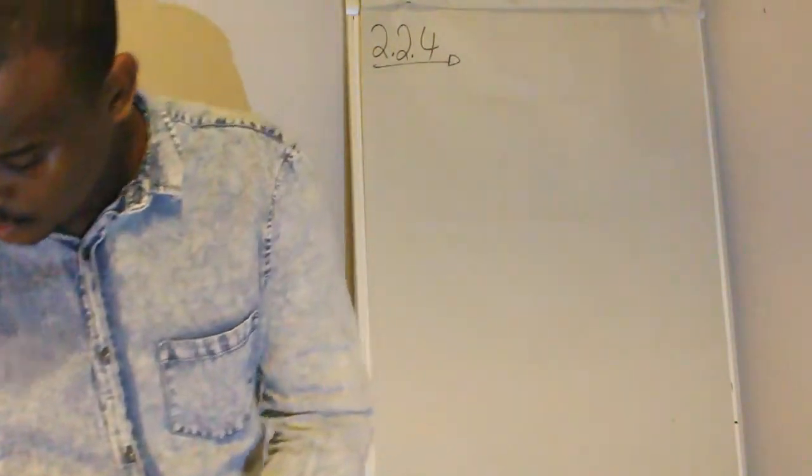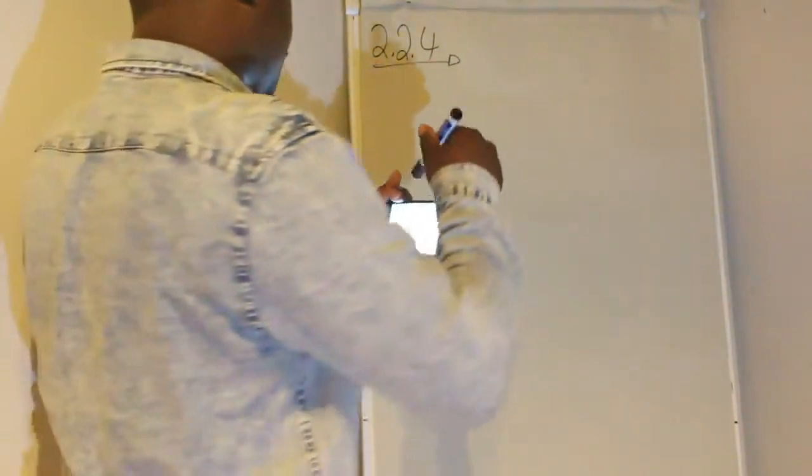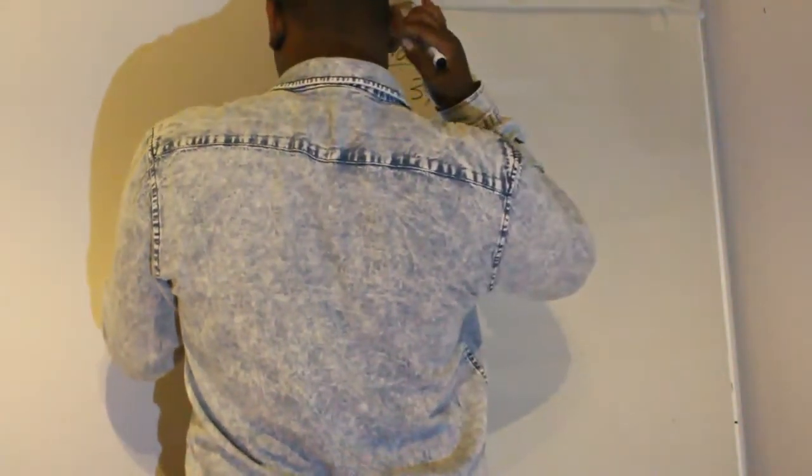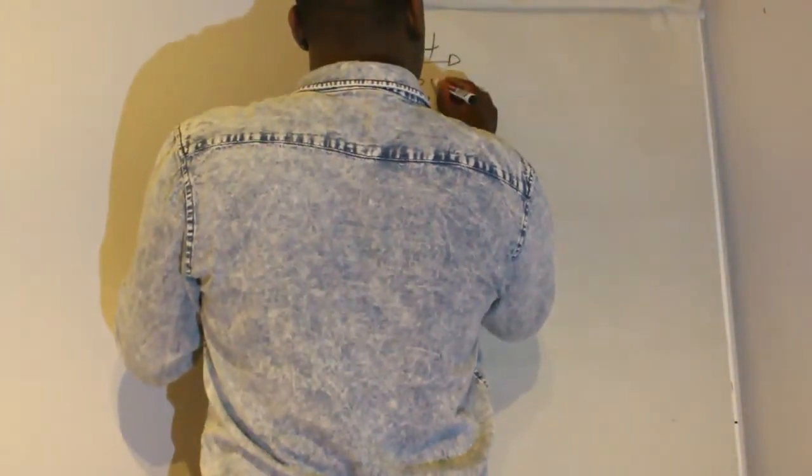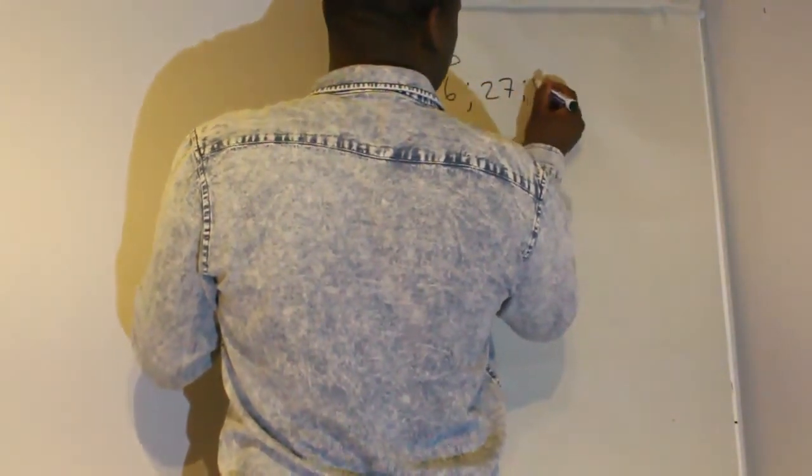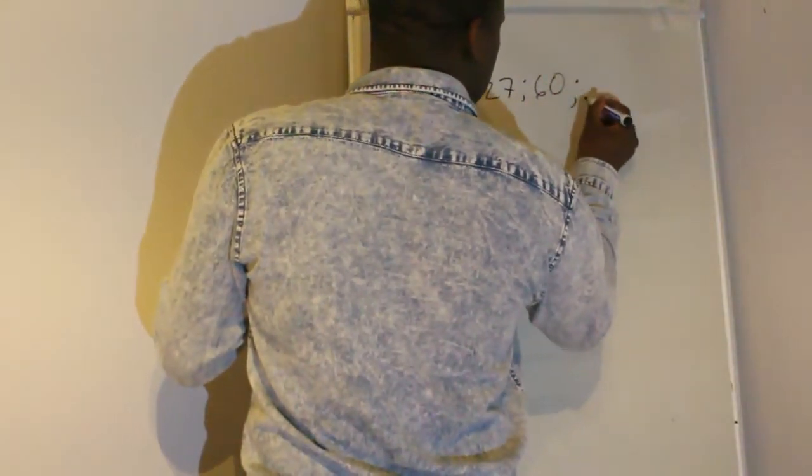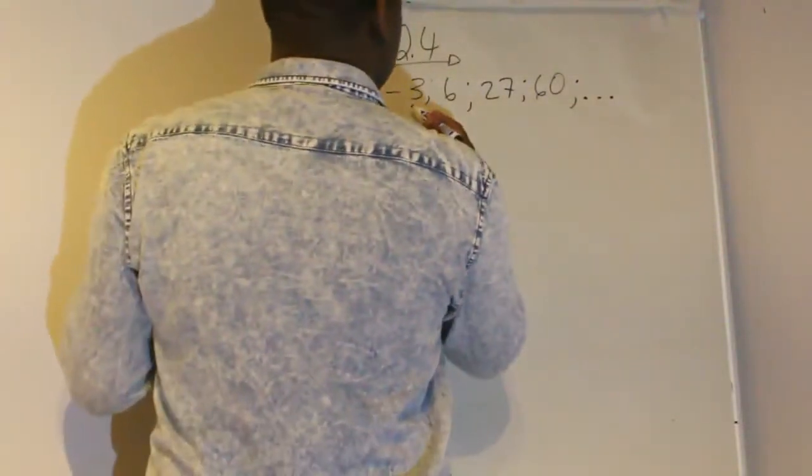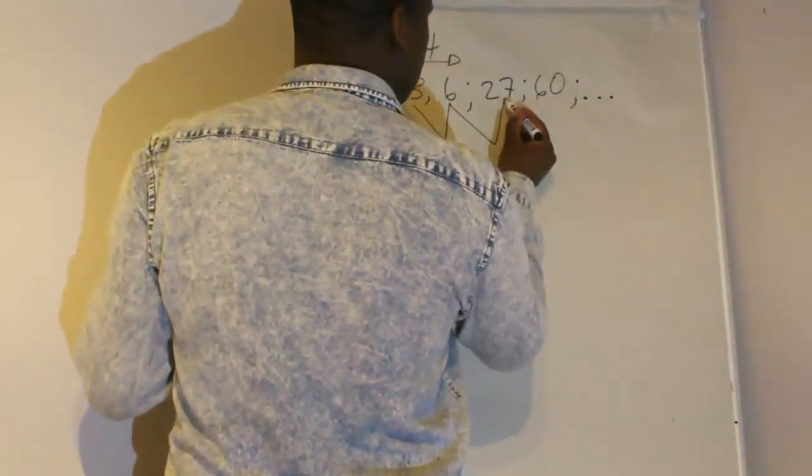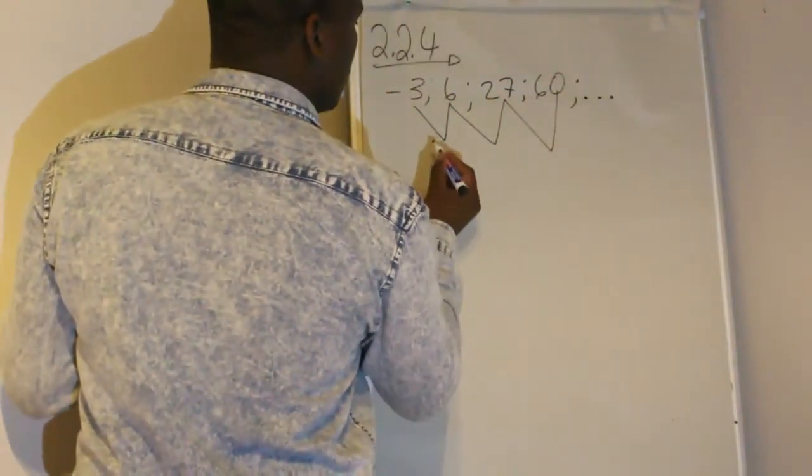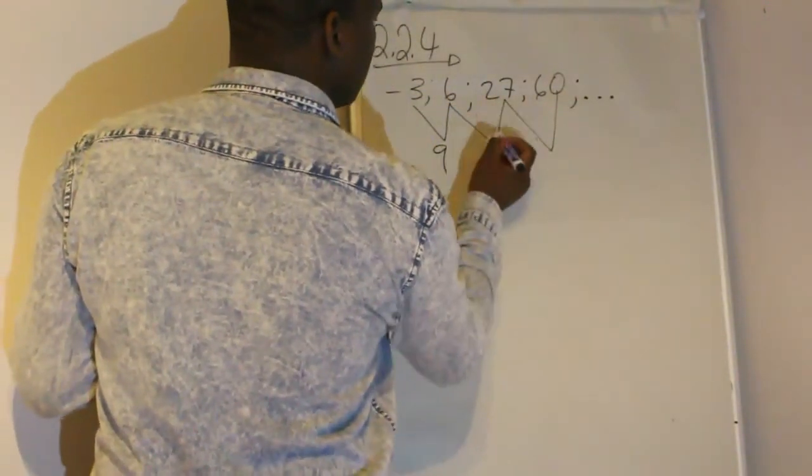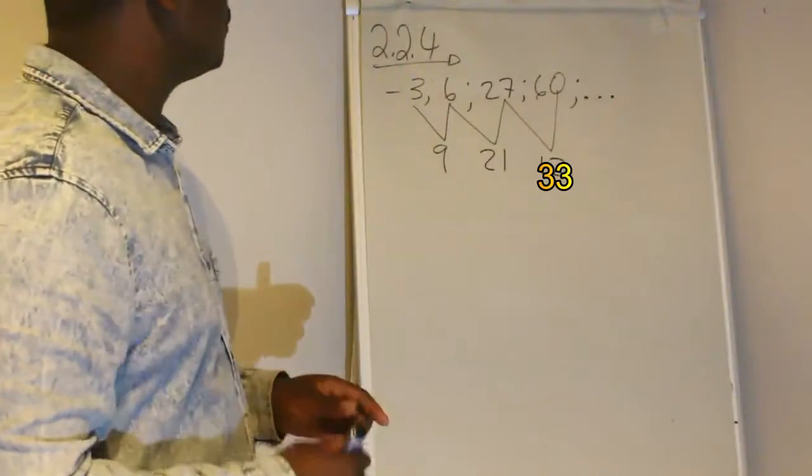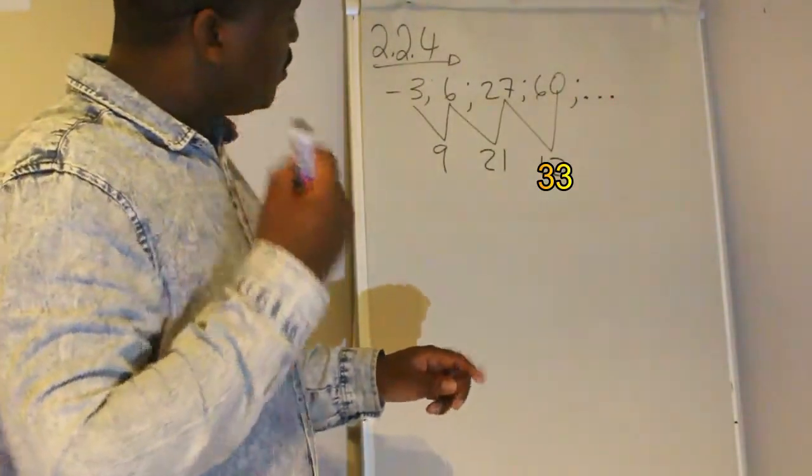So this is our quadratic pattern. It had negative 3, 6, 27, 60, and so on. Our first difference is this. So we have 9, we have 21, we have 12.